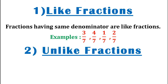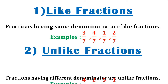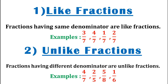The second type are the unlike fractions. Fractions having different denominators are known as unlike fractions. Now let us see it with an example. Here we have 4 by 7, 2 by 5, 5 by 8, and 1 by 6. All the four fractions have their denominators different, so they all are examples of unlike fractions.